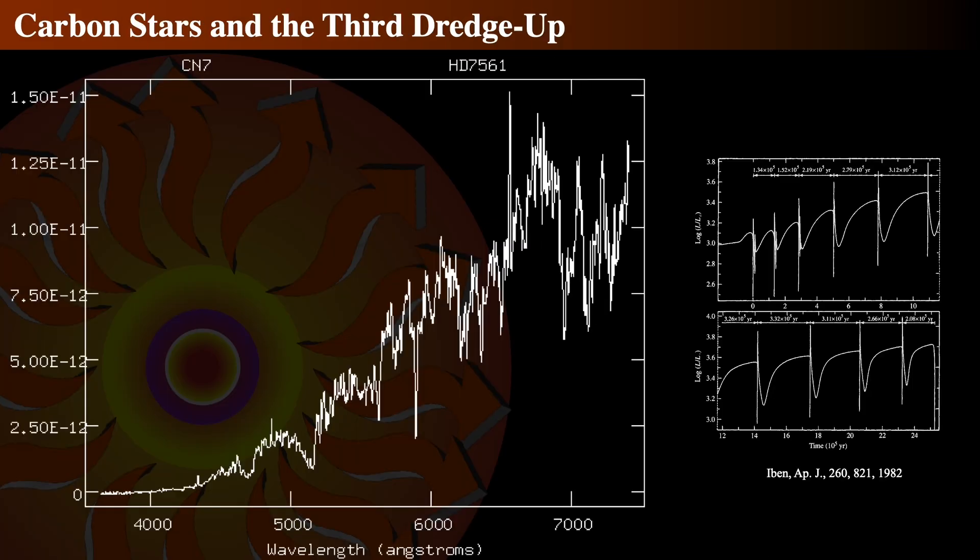For stars slightly more massive than the Sun, say five or so solar masses, these thermal pulses create yet another deep convection cycle, which brings up carbon-rich material to the surface. This can be seen in the spectra of red giant stars. Notice in this sample spectrum that we're focusing on the visible wavelength bands, which are between 4,000 and 7,000 angstroms. Nearly all the emission is in the red end. This is typical for such carbon stars, where you see the banding absorption features due to numerous and varied carbon molecules, such as silicon carbide, in the star's expanded envelope.